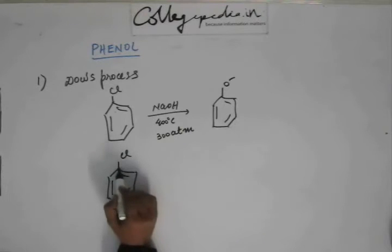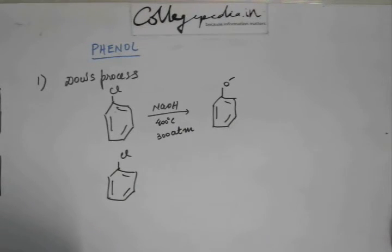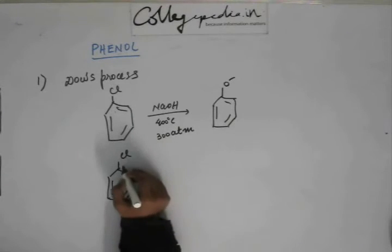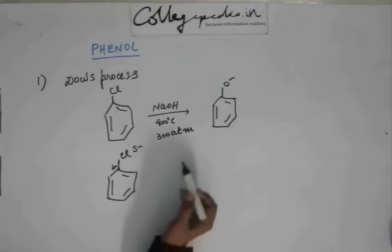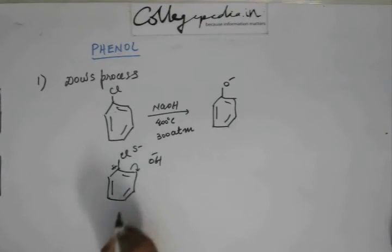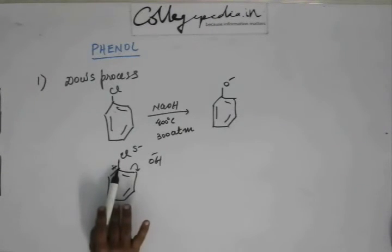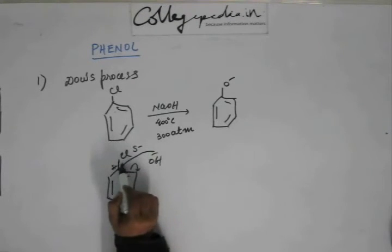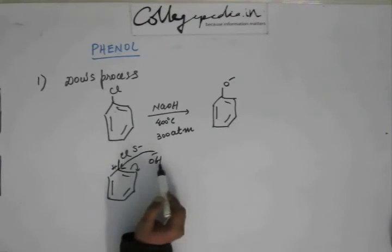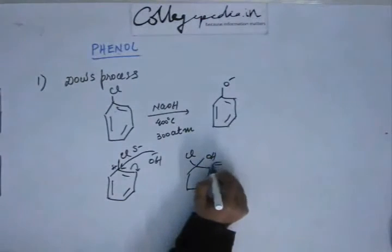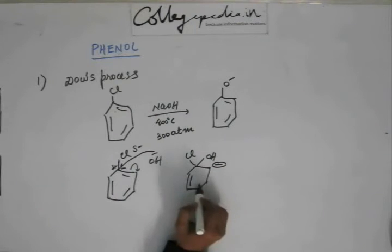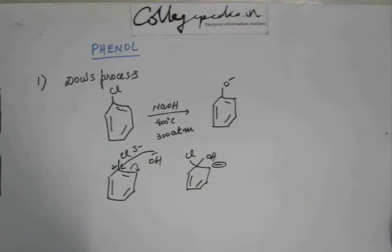And we have a phenoxide ion like this. What has happened here is: the carbon to which this chlorine is attached is attacked by this hydroxide ion because of certain partial positive charge polarity, because of electronegativity difference between carbon and chlorine. When this base attacks this carbon, one of the pi bonds has to shift to other carbon to create a pure positive charge on this carbon. So this carbon which is attached to chlorine forms a bond with this hydroxide ion, and the pi bond breaks.